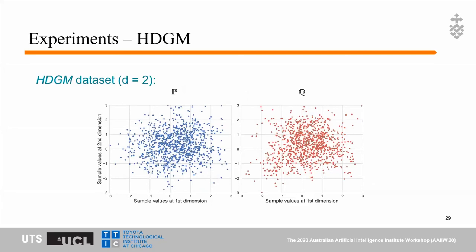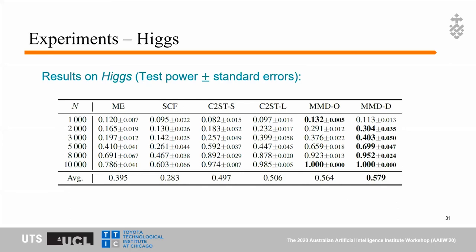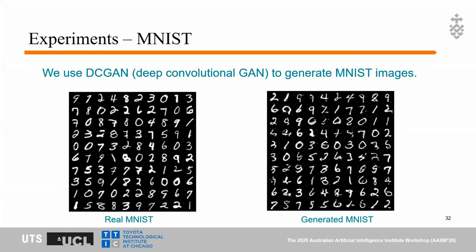Another dataset is the high-dimensional Gaussian mixture dataset, HDGM. We illustrate samples of HDGM when the dimension is 2. When increasing the sample size or sample dimension, MMD-D achieves good results compared to other baselines. On the Higgs dataset, we also achieve the highest test power. We also apply our deep kernel-based MMD to image data — a very challenging task — using real MNIST and generated MNIST from a DCGAN, achieving the highest test power with a large margin.